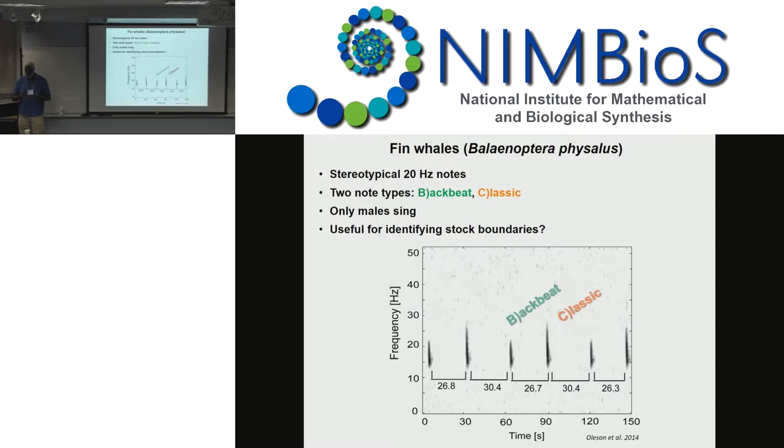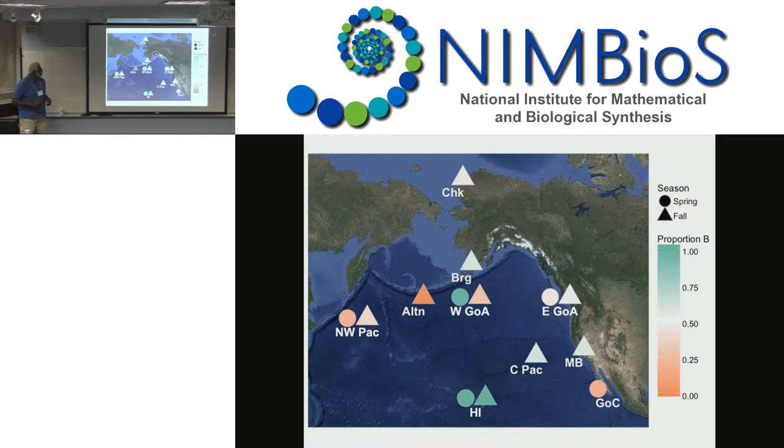We have fin whales distributed globally in all the ocean basins. We are looking at just one region in the North Pacific, so we're looking right now at what potential structure we have there. The issue is that we know very little about fin whale structure or even have any hypotheses. We want to use acoustics. Fin whales have a fairly simple acoustic repertoire, the stereotypical 20 hertz calls. There are two main types of notes that have been described: one is a slightly lower frequency downswept backbeat, and then a slightly higher frequency classic. It's thought that only the males sing.